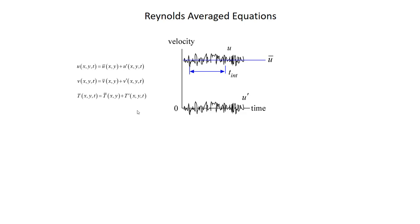Our process is: first, take our equations and substitute in these definitions, expressing everything in terms of an averaged quantity plus a fluctuating quantity. Then we actually perform the averaging. When you average the averaged quantities you get a very simple answer, and when you average a fluctuating quantity you get zero — at least most of the time, with a couple of exceptions.